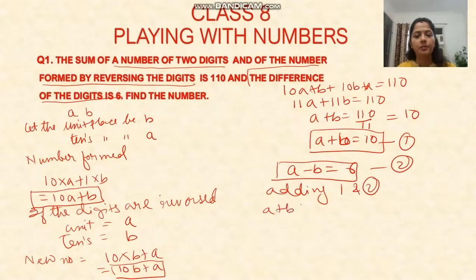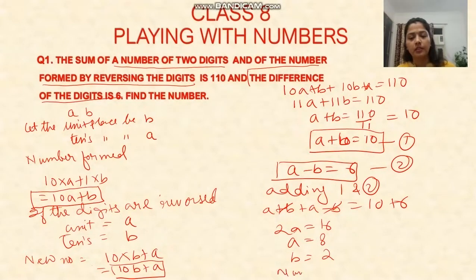Adding equations 1 and 2, a plus b plus a minus b equals 10 plus 6. The b terms cancel, so 2a equals 16, therefore a equals 8. If a is 8, then b will be 2. So our number will be 82 or 28. In this case, both answers are correct.